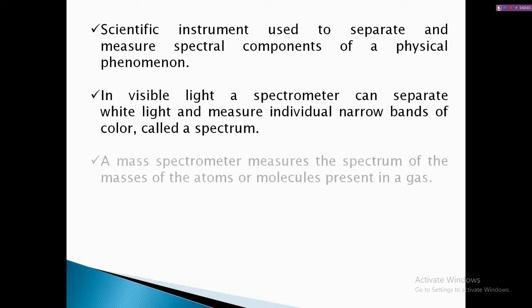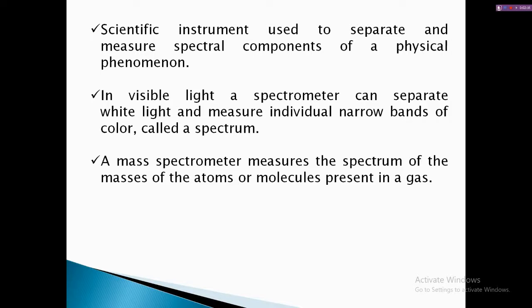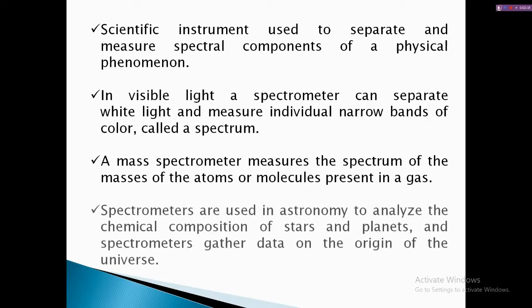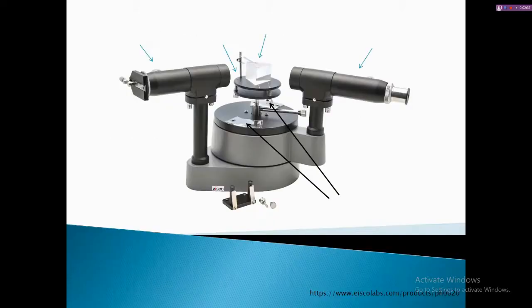We can measure the properties of these narrow bands of different colors that comprise what we call the spectrum. On the other hand, a mass spectrometer can determine the molecules of a gas composed of different atoms. Spectrometers are also used in astronomy to analyze the chemical composition of stars and planets — in fact, the composition of the Sun is also determined by spectrometer techniques, gathering a lot of data on the origin of the universe.